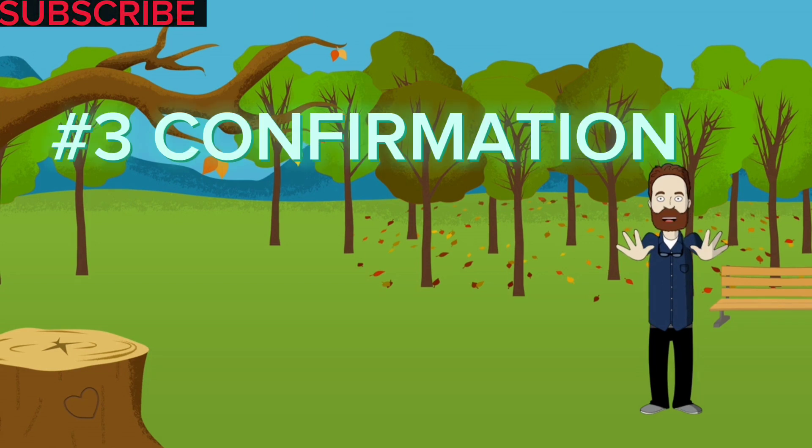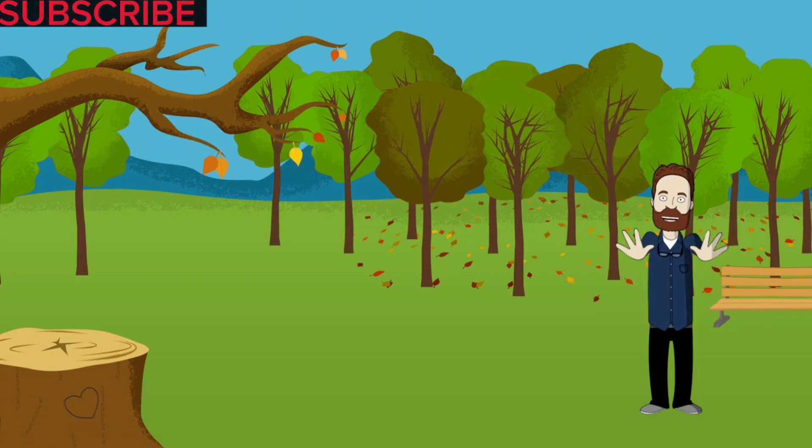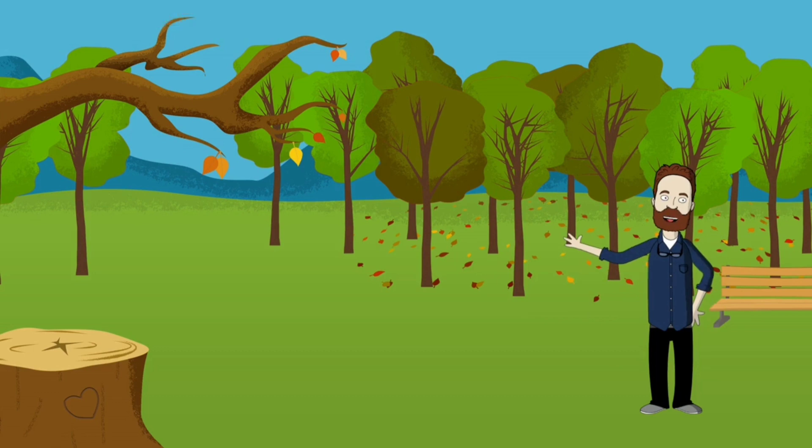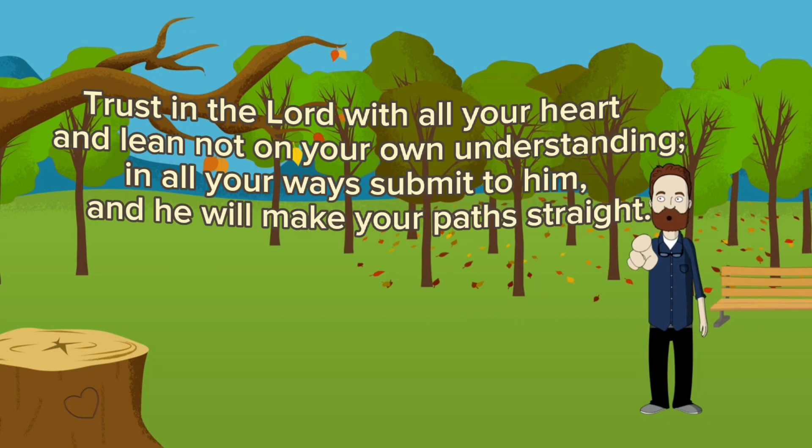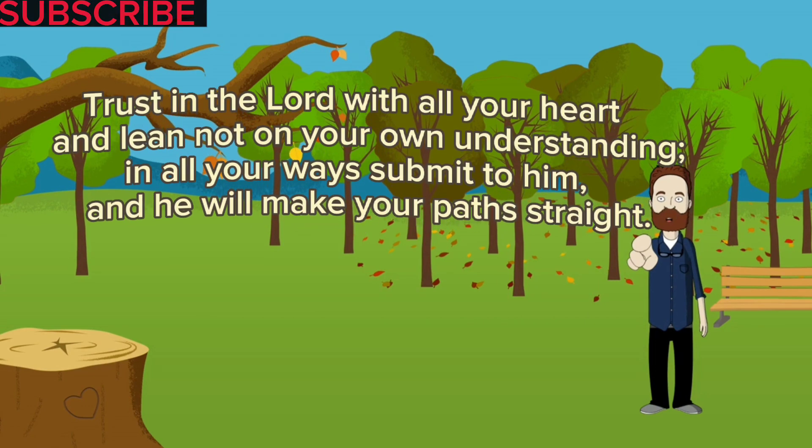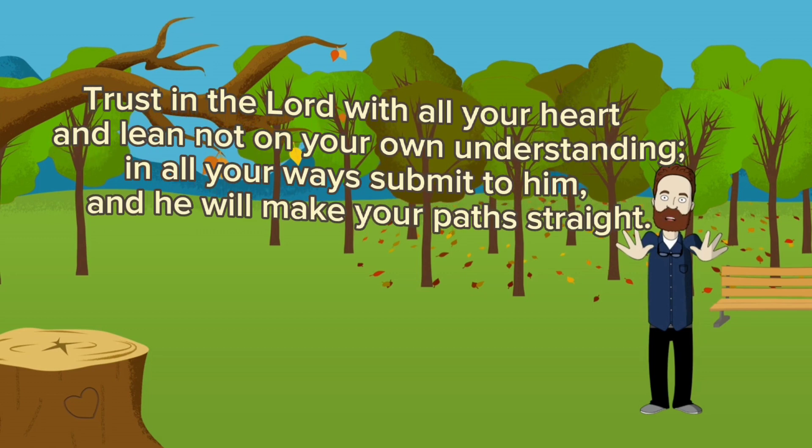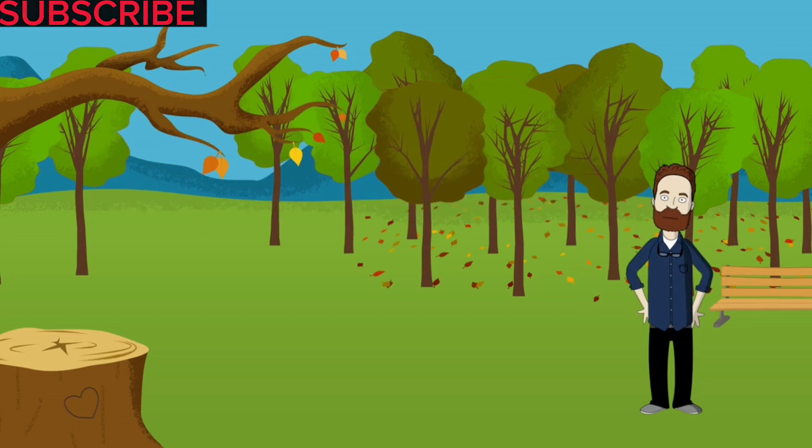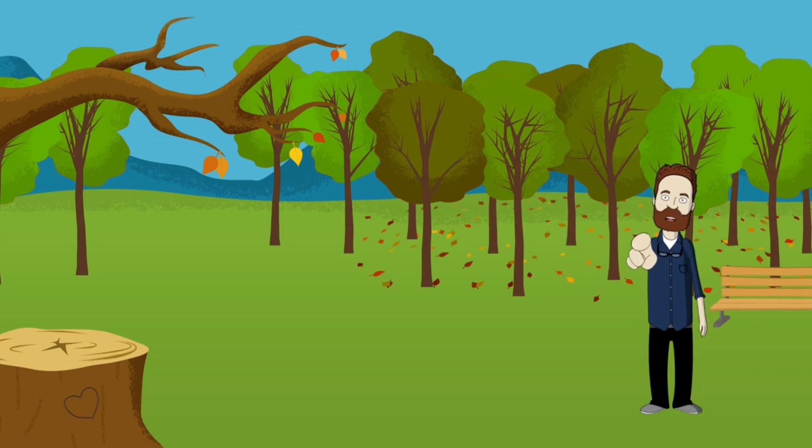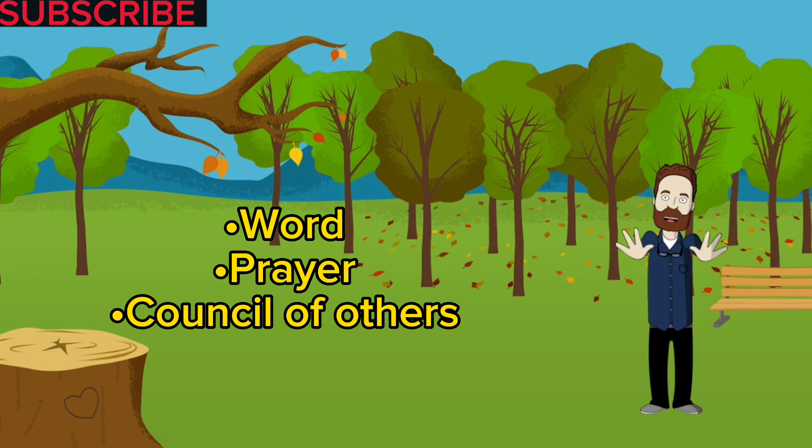Sign 3: Confirmation. The third sign that you're on the right path according to the Bible is confirmation. Proverbs 3:5-6 says, 'Trust in the Lord with all your heart and lean not on your own understanding. In all your ways submit to Him and He will make your paths straight.' When we are on the right path, God will confirm it to us through His word, prayer, and the counsel of others.